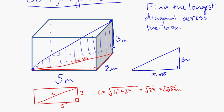Because sharing this edge of the box, 3 meters tall, with the diagonal across the bottom of the box, which we've just discovered is 5.385.